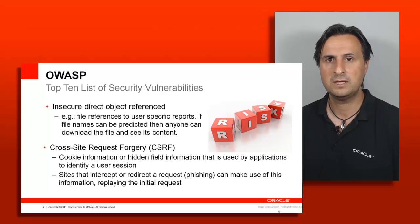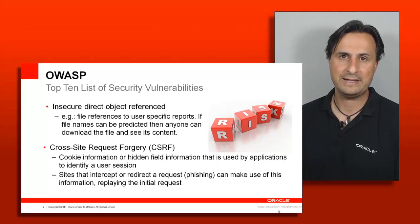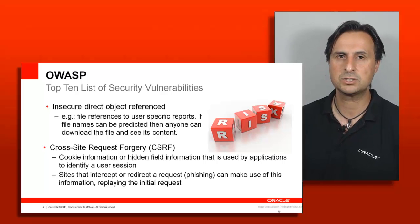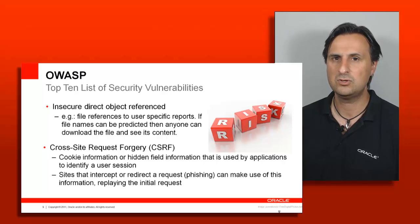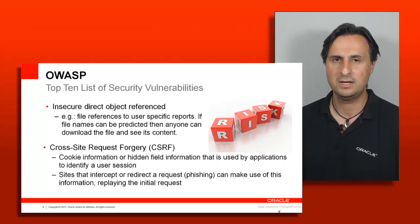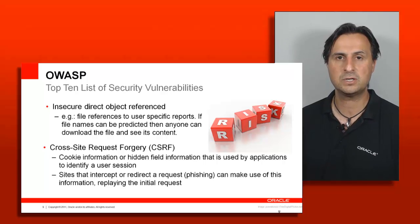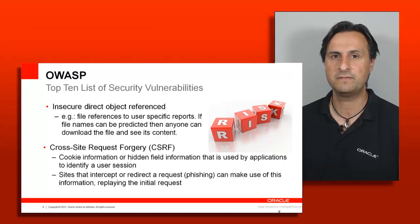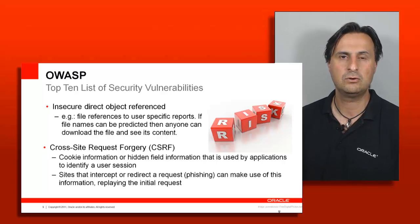The next topic is insecure direct object reference. The scenario here is where your ADF application generates reports as Excel sheets or PDF documents and redirects the user to that document. If the documents have predictable naming patterns — for example, a sequential number followed by the authenticated username and .pdf — you could start guessing other people's documents. If the document is not protected or access is not verified, you are in trouble.